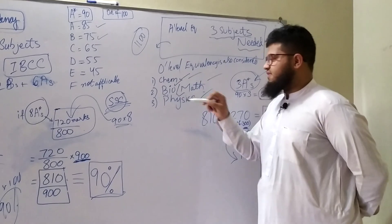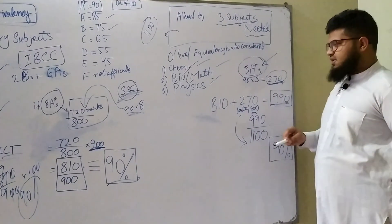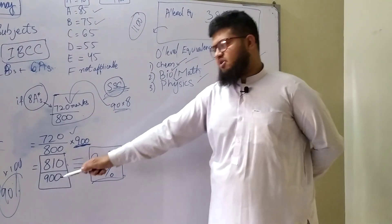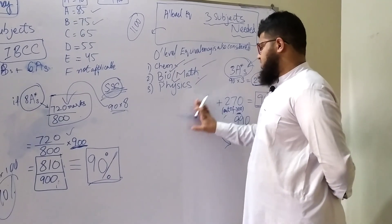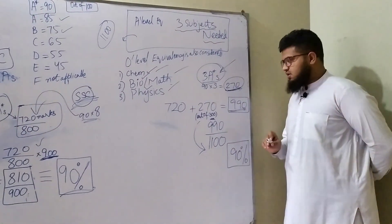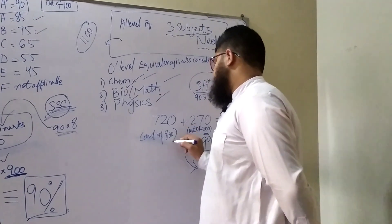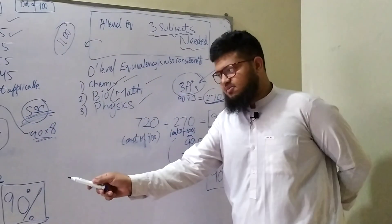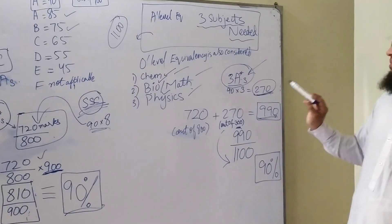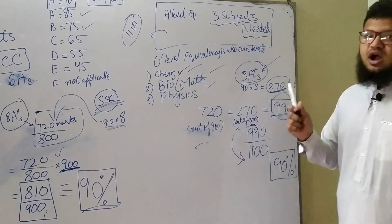What does this mean? It means if someone gets 270 out of 300 in A-levels, and in O-levels their marks were - the original marks were 720, not 810 because 810 came after scaling - so 720 plus 270 equals 990 marks. This is out of 800 plus 300, which equals 1100. So 990 out of 1100 marks will come, and times 100 gives you the percentage, which is 90%.